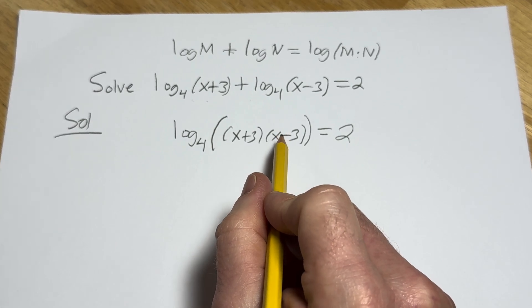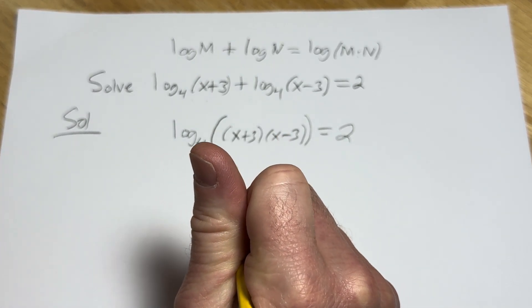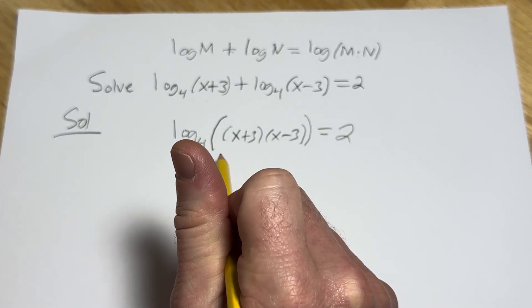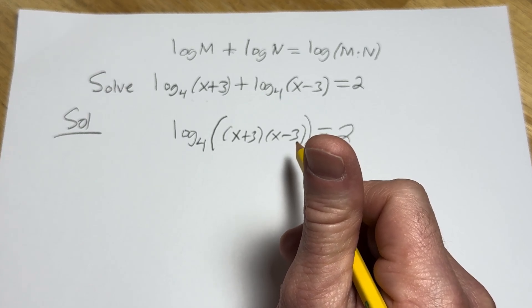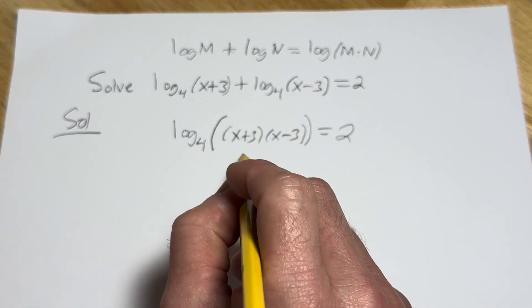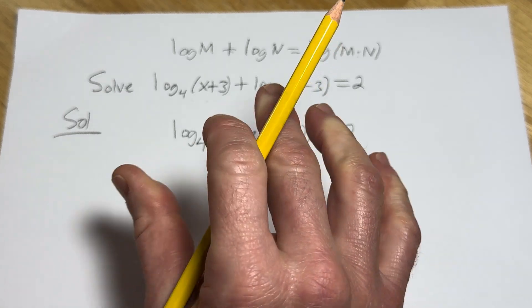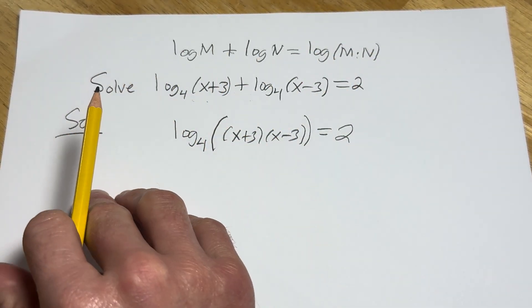And this has been written in what's called logarithmic form. So now we want to write this in what's called exponential form. And the reason we want to do that is because it'll get rid of the log, right? We're trying to find x, but it's like inside this log, and we're never going to find it unless we get rid of the log.